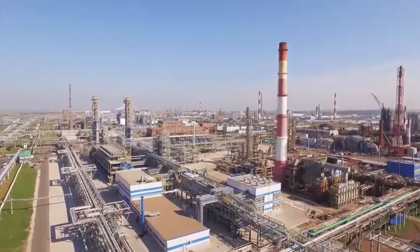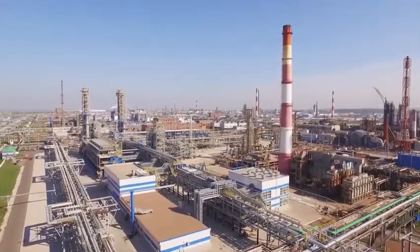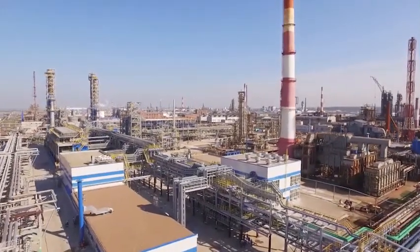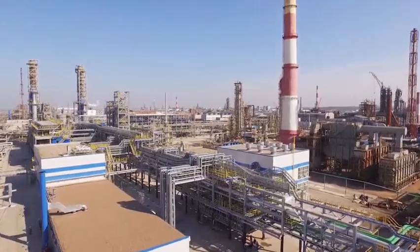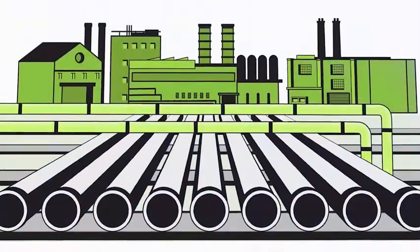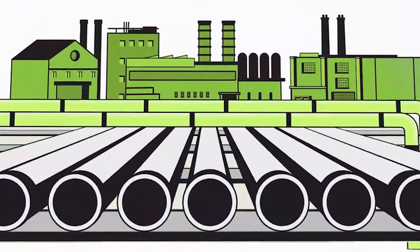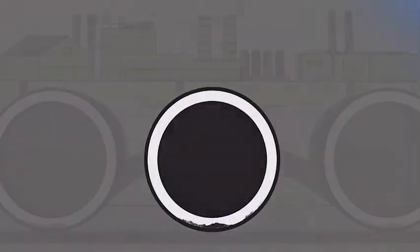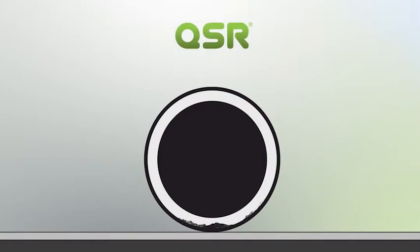How do you measure the wall thickness of pipe sections when you don't have direct access to them? This is a common challenge in industry when defects can be hidden from inspection by structures such as supports and corrosion products.